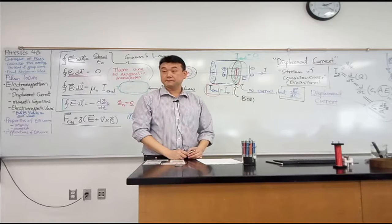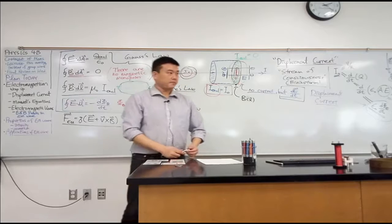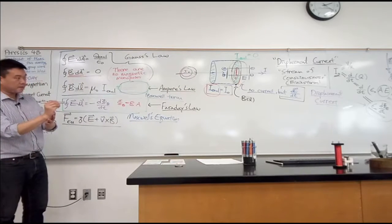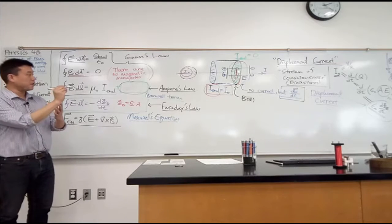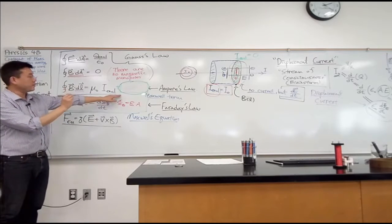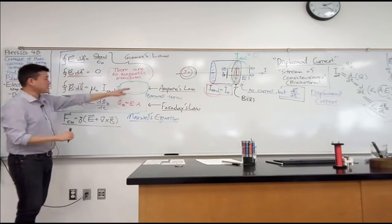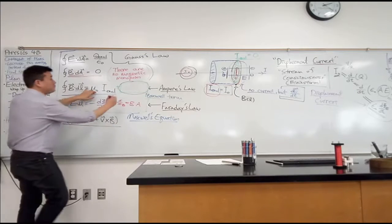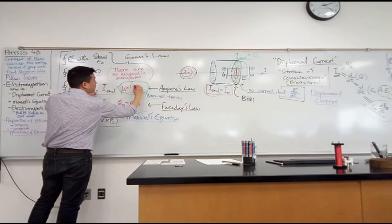This is the quantity that we are going to pretend is something that acts like a current here. It's going to enter into here. So the modified version of Ampere's law will look like this. If this additional term, it will have this coefficient of mu naught, just like the other term. It will be mu naught times displacement current.